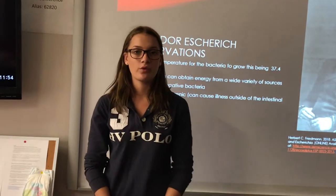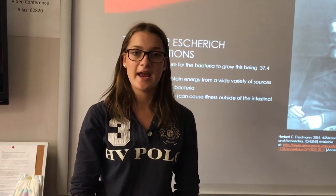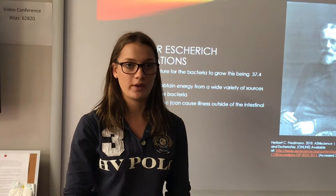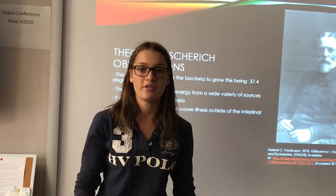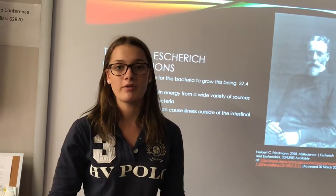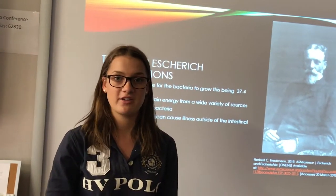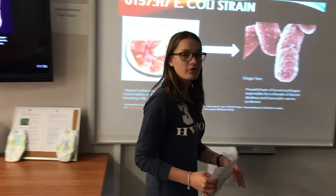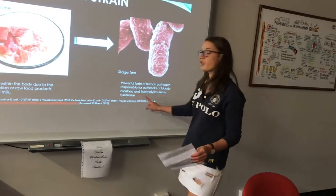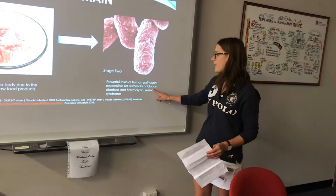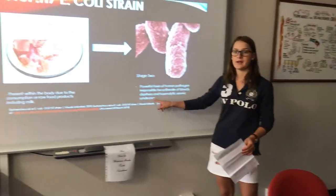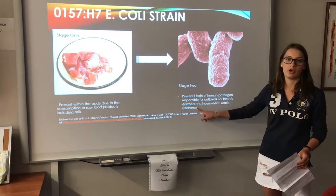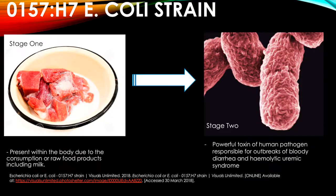One of the main causes of high infant mortality rate in the 1800s in Germany was from the discovery of the stereotype O157H7 E. coli strand. This strand produces a powerful toxin responsible for outbreaks of bloody diarrhoea and hemorrhagic syndrome, which is due to the consumption of raw food products including milk and raw meat.